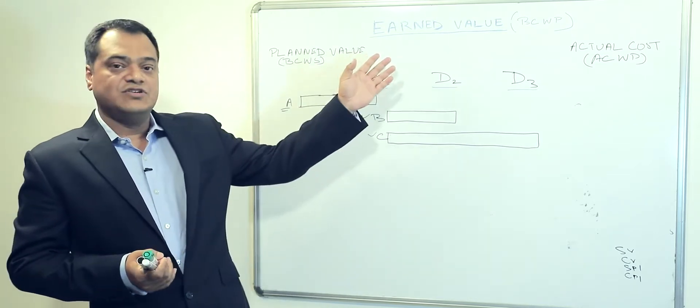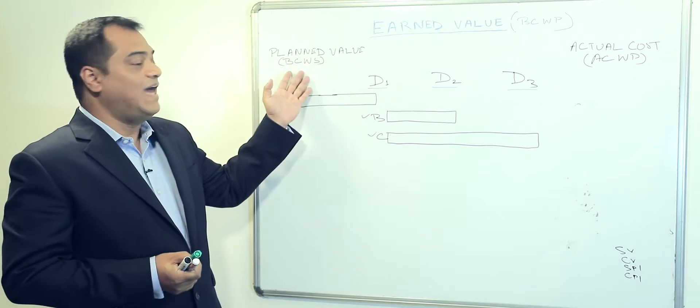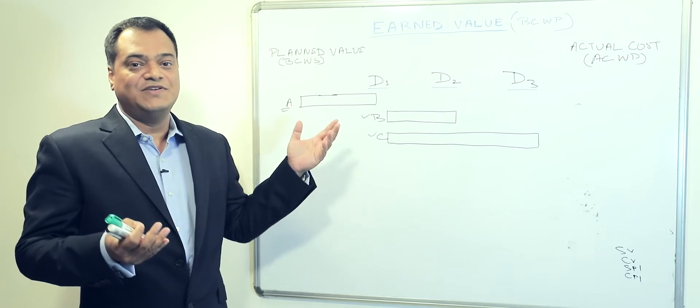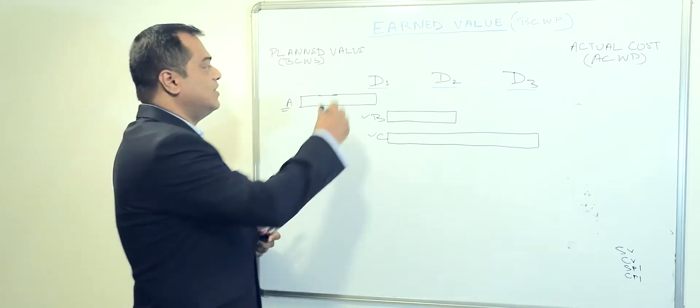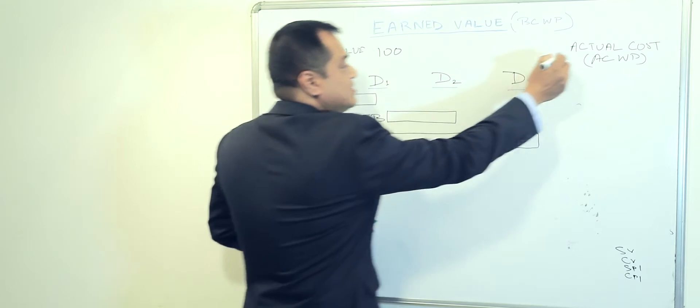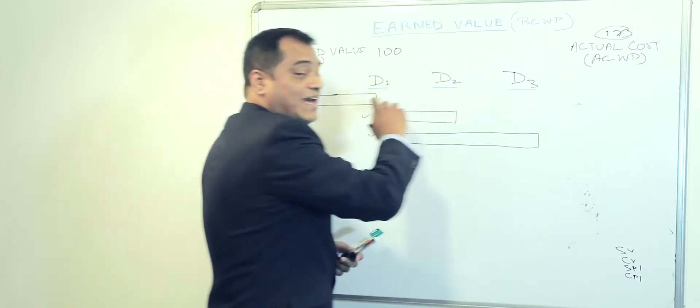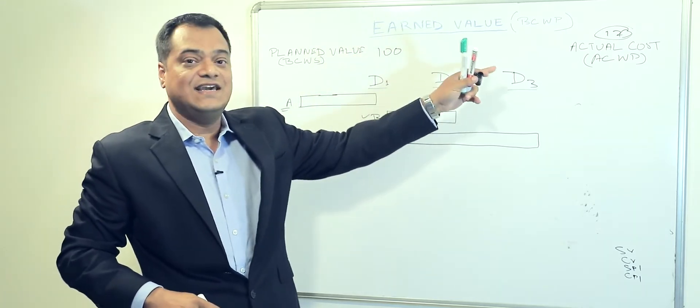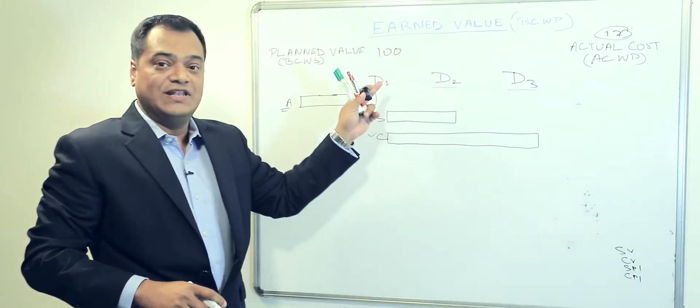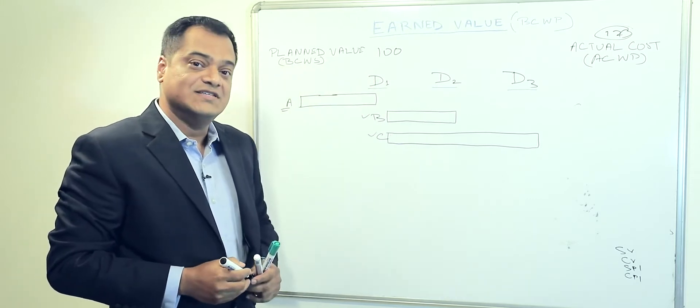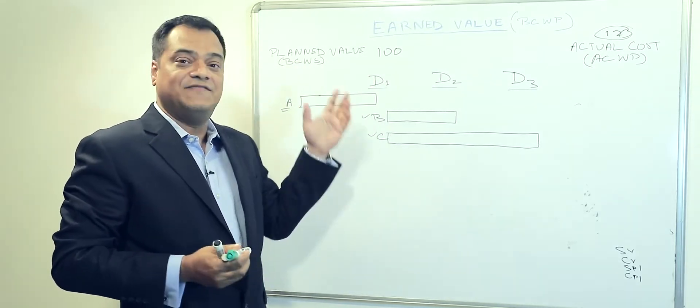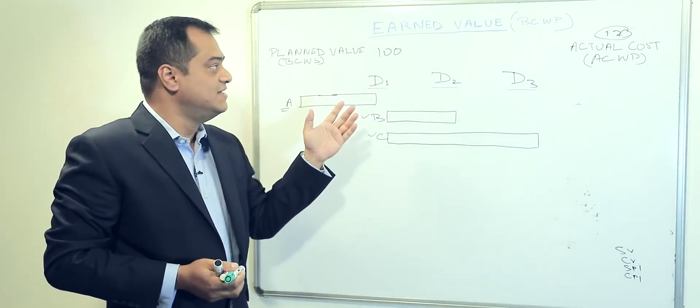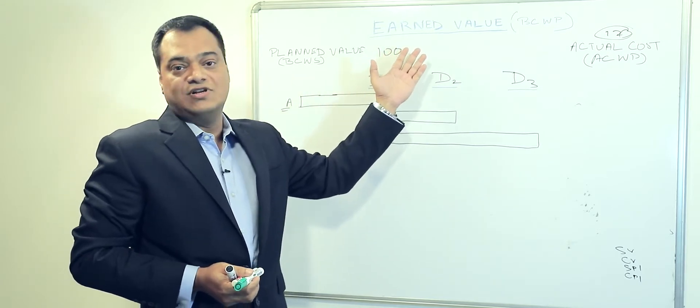So earned value is often compared with plan and actual. When we say plan and actual, we understand this topic very easily. For example, plan is 100 and actual is 120. So we know there is a difference of actual cost against plan. We can easily arrive at the variance between the two. But the problem with this concept is it just measures the cost. It does not measure the efficiency of the business. So in order to measure the efficiency of the business, we have a concept called earned value.